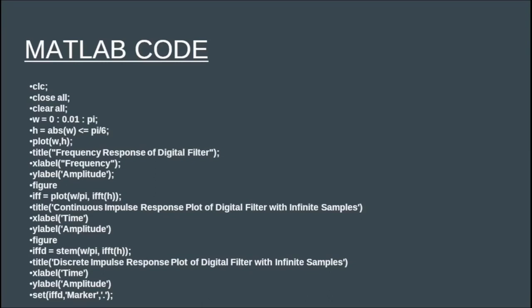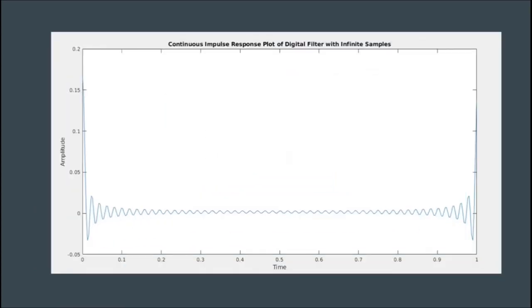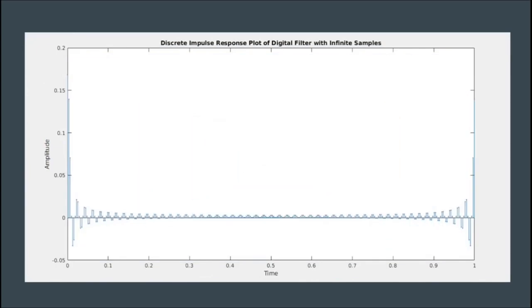In Steps 2 and 3, we plot the impulse response of the ideal filter with infinite samples. In Step 2 we plot the continuous impulse response, and in Step 3 we plot the discrete impulse response. For both, we find the inverse Fourier transform of H using MATLAB's IFFT command. For the continuous domain we use the plot keyword, and for the discrete domain we use the stem keyword. The continuous impulse response gives the sinc function, and the discrete version gives a sampled version of the same — the discrete impulse response of the filter with infinite samples.